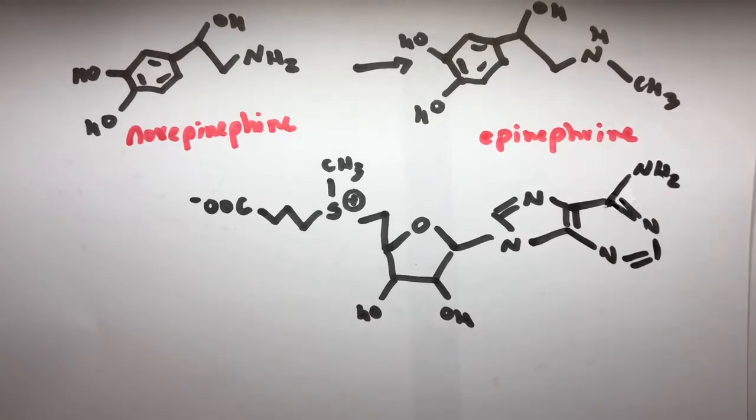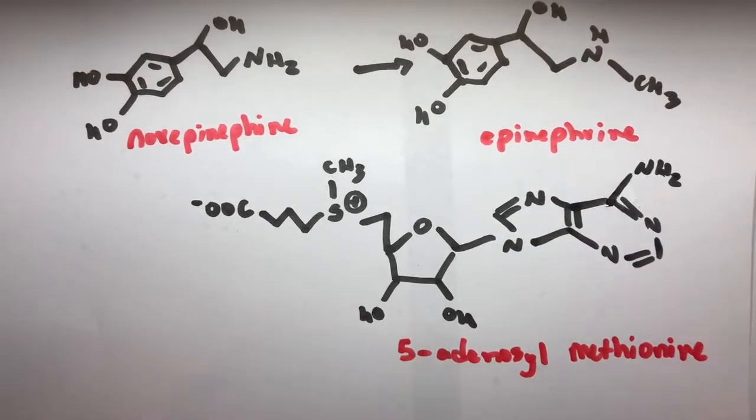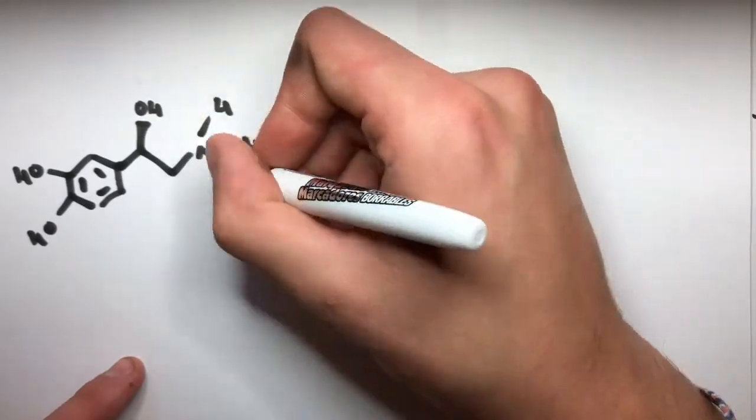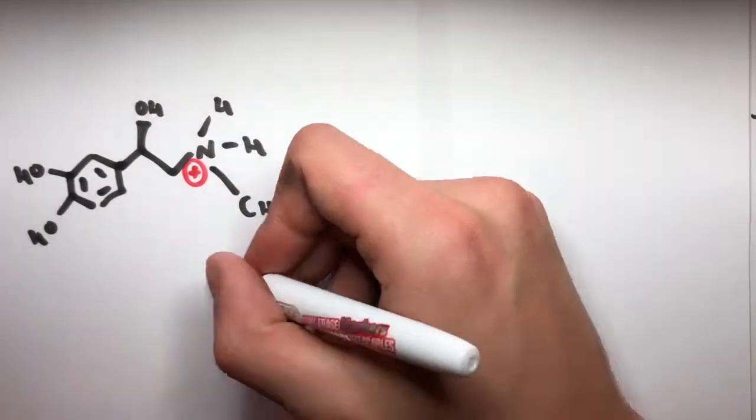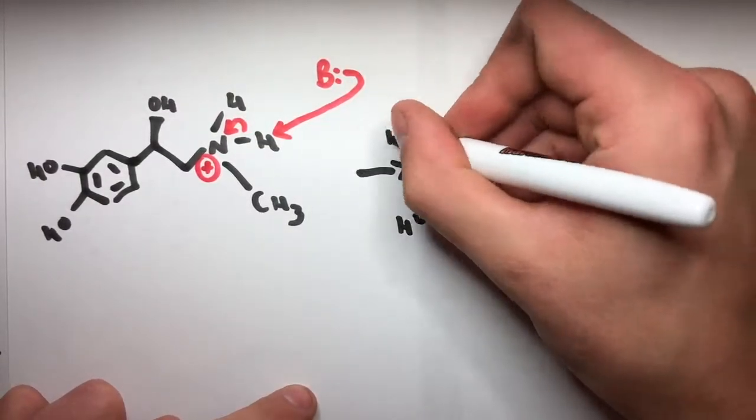In this final step, the lone pair from the norepinephrine attacks the delta-positive carbon and the electrons flow from the delta-positive carbon atom to the delta-negative sulfur atom. The positive nitrogen cation now loses a hydrogen to a base in solution, and the electrons are placed back on the nitrogen atom, and epinephrine is finally obtained.